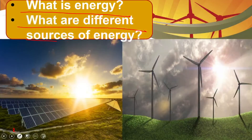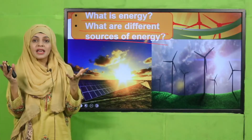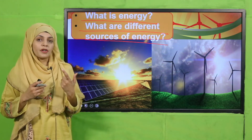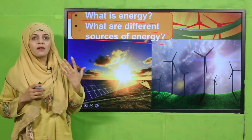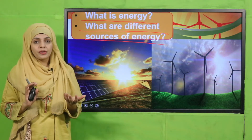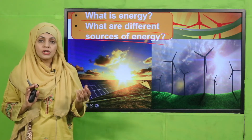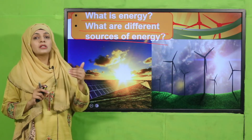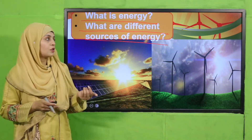What are the different sources of energy around us? Look at the pictures carefully. The sun is a source of energy — it gives us light and heat. Wind is also a source of energy. Light is a source of energy. Heat is also a source of energy. These are all different forms and sources of energy.